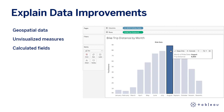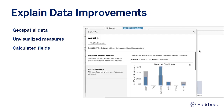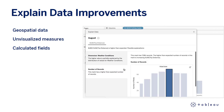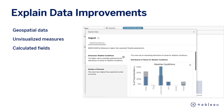In 19.4, explain data is getting even better, now supporting geospatial data, unvisualized measures, and calculated fields, allowing you to use the capability in even more situations.